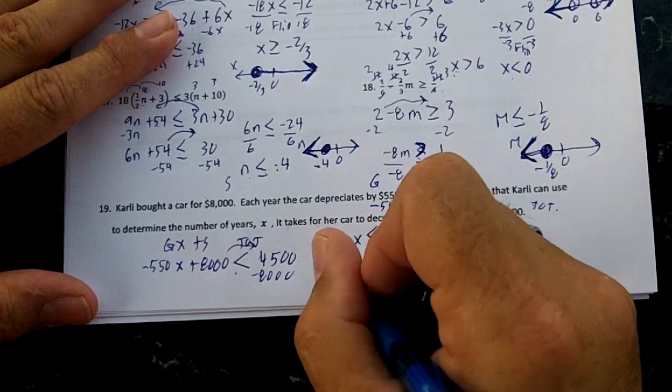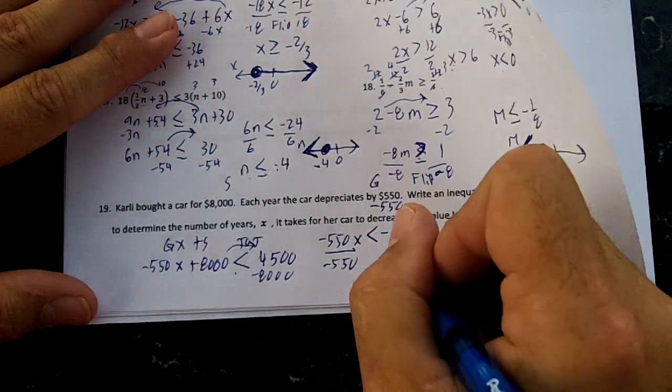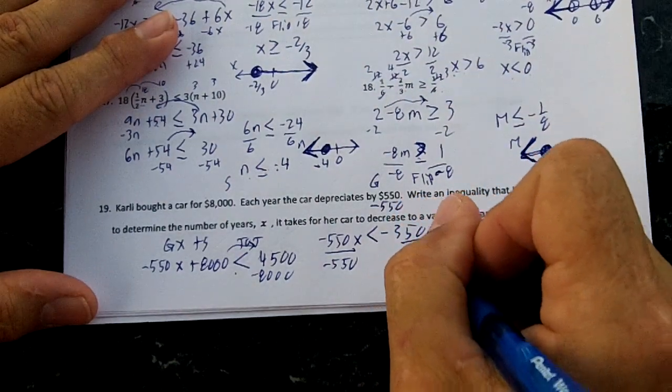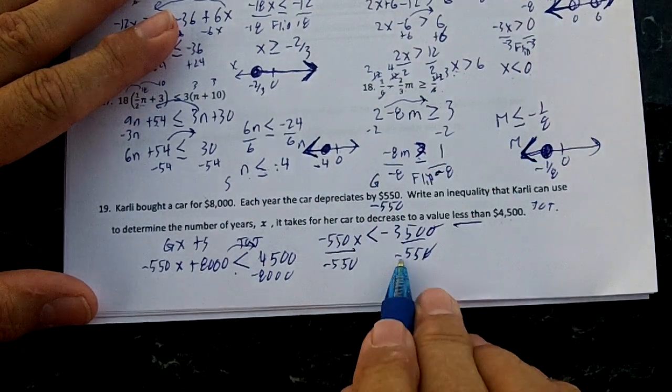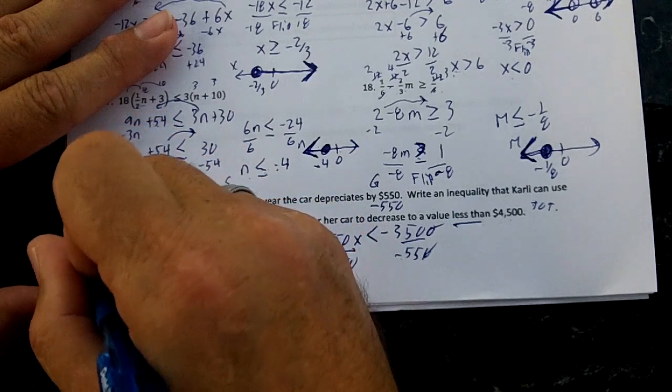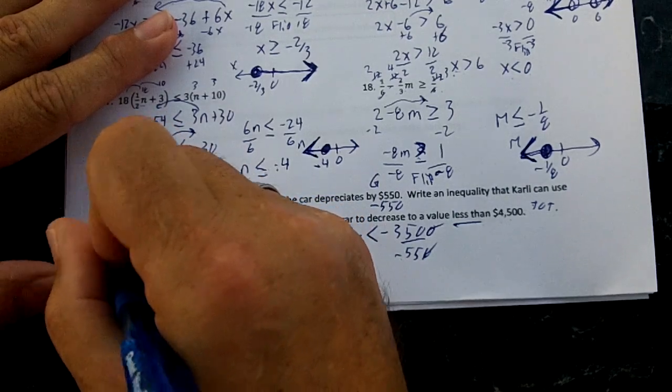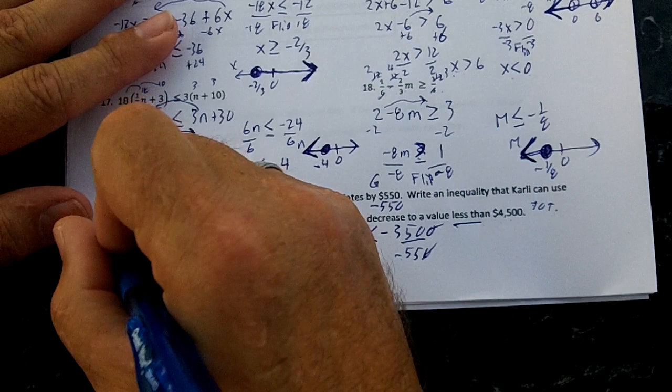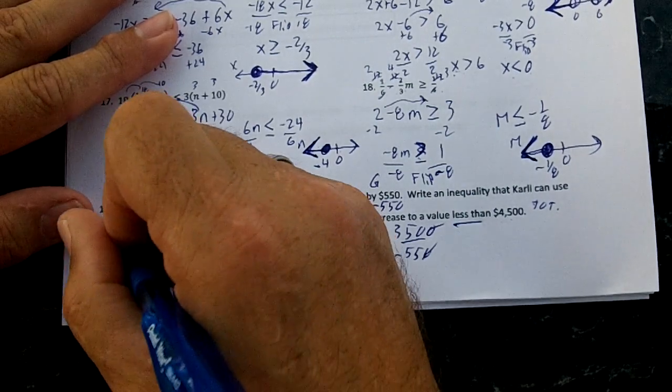Now then I'm going to divide by negative $550, and I don't have a calculator with me, so I'm going to do this by hand. Two negatives makes a positive, and I need 55 into 3,500. That's going to go six times, it's 330 with 20 left over.